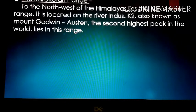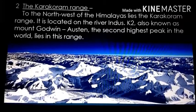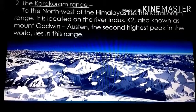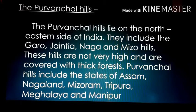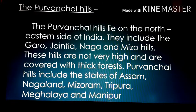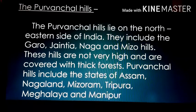The second range in the northern mountains is the Karakuram range. To the northwest of the Himalayas lies the Karakuram range, located near the river Indus. K2, also known as Mount Godwin-Austen, the second highest peak in the world, lies in this range. The third topic is the Purvanchal hill ranges. The Purvanchal hills lie on the northeastern side of India and include the Garo, Khasi, Naga, and Mizo hills. These hills are not very high and are covered with thick forest. Purvanchal hills include the states of Assam, Nagaland, Mizoram, Tripura, Meghalaya, and Manipur.